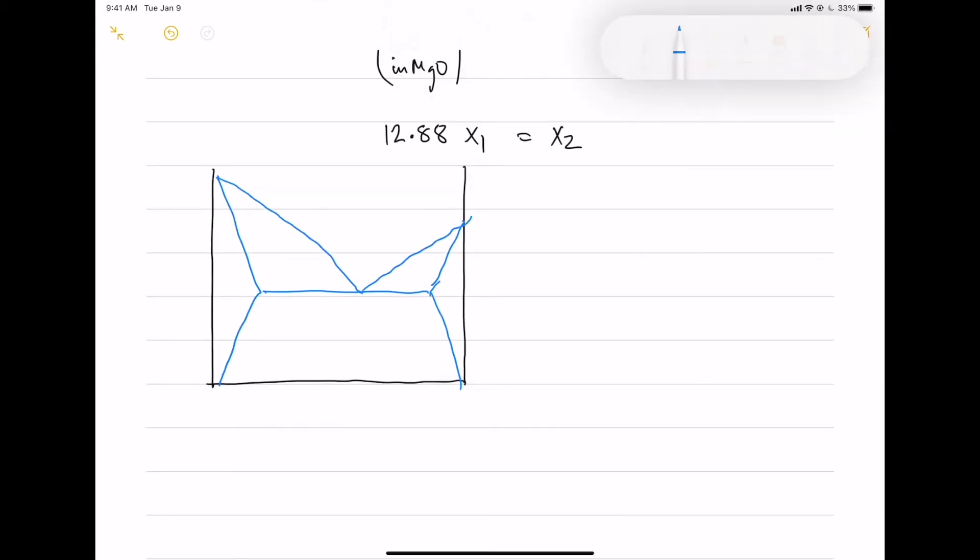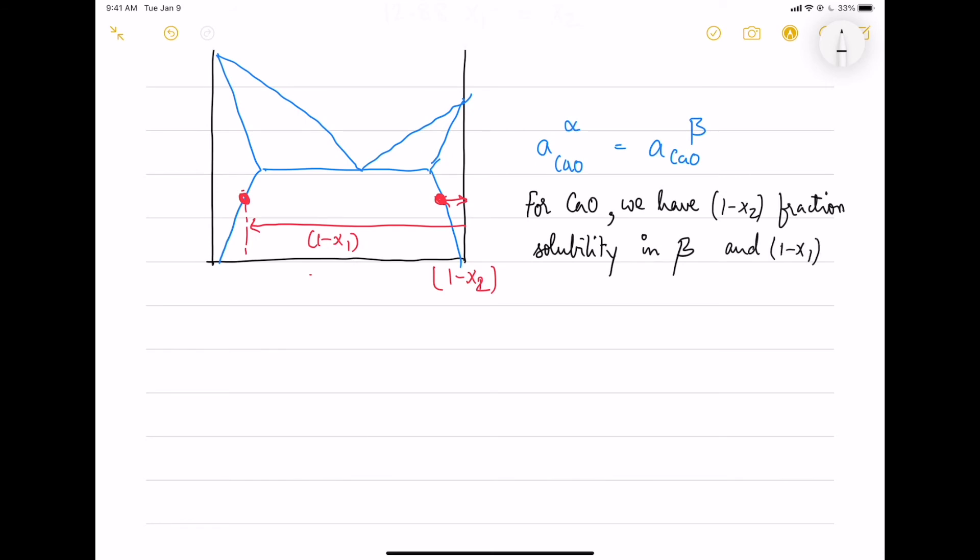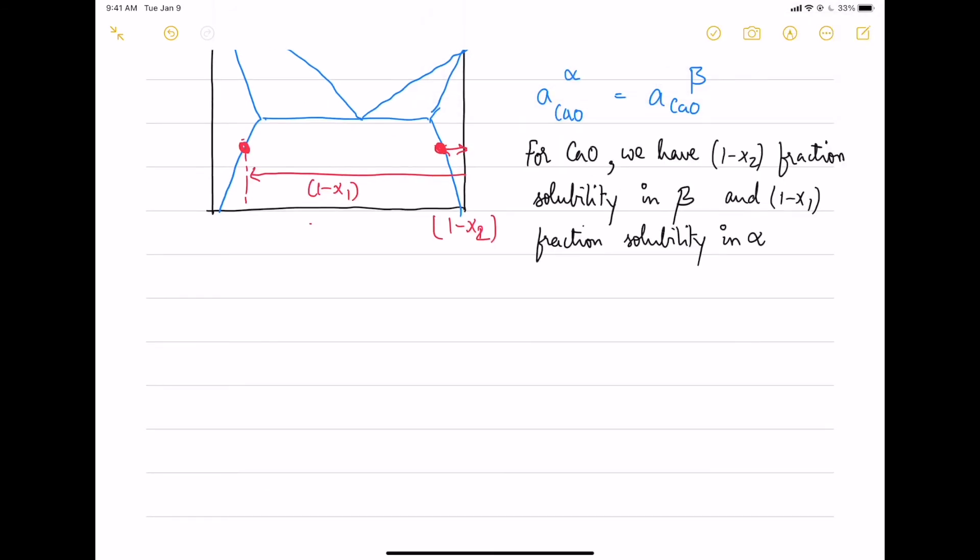So now for the B component calcium oxide, we have the maximum solubility as 1 minus X2 and 1 minus X1 if you take from the right hand side. So we will use the same equation. And here for calcium oxide, we talk about the solubility of magnesium oxide in calcium oxide. So we have 1 minus X2 fraction solubility in beta and 1 minus X1 fraction solubility in alpha.